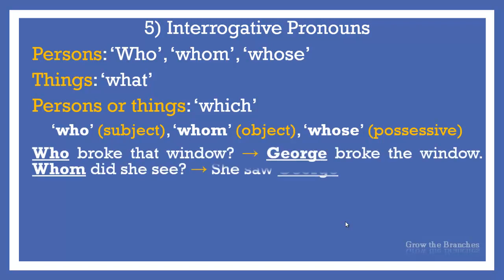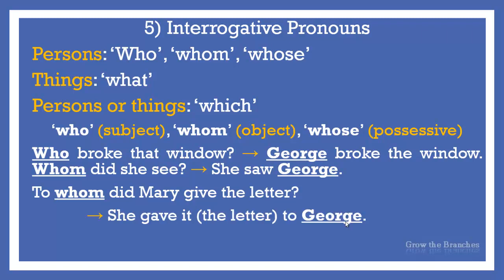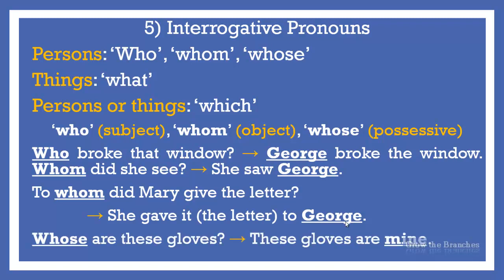The question who broke that window has the answer: George broke the window. Who asks about the subject — it functions as the subject of the interrogative sentence. Whom did she see? She saw George. Whom does not ask about the subject but about the object. So when you want to ask about the subject, use who; and when you want to ask about the object, use whom. To whom did Mary give the letter? She gave it to George. Here we ask about the indirect object, George, whom the letter was delivered to. The possessive form of the interrogative pronoun is whose. For example: Whose are these gloves? — These gloves are mine. Here mine is a possessive pronoun and we ask about possessive pronouns, so we use whose.